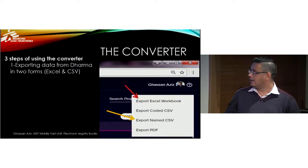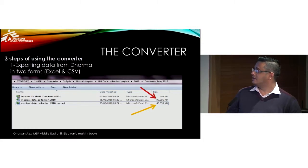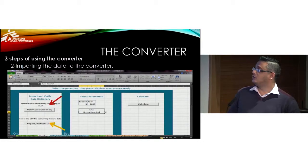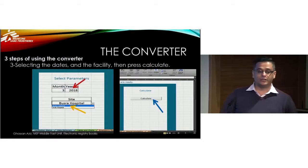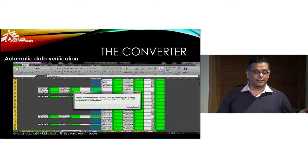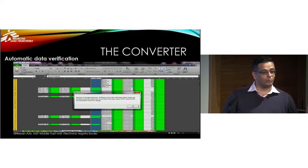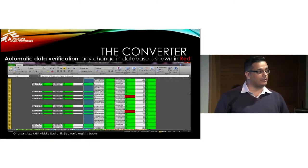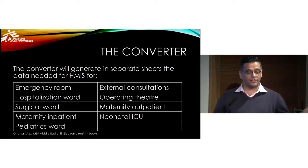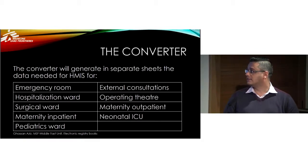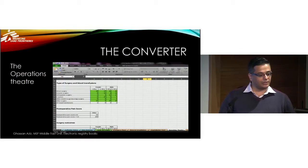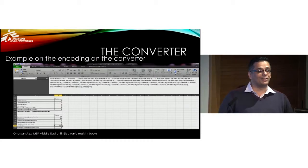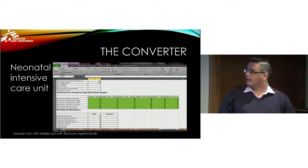You export the data as Excel and CSV forms — three months of data was almost 90 megabytes on your computer. You export it into the converter tool, choose the month, the facility, and the year, then press calculate. It takes five minutes. It does automatic data verification to make sure all data is normal. If there's any illogical data, it will be shown in red. Then all the data required for all departments is available — emergency room data, operating theater, everything. You just need to enter it into the HMIS. This is just an example of how much encoding is required to get one cell, like number of live births.